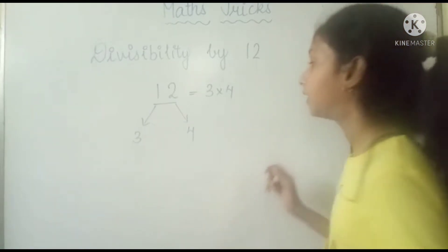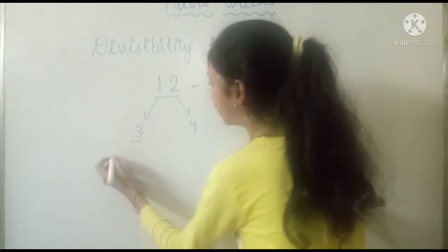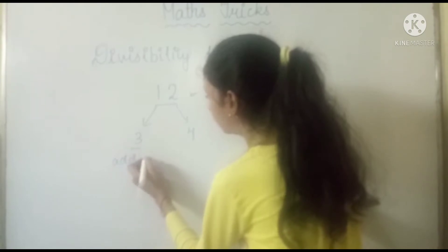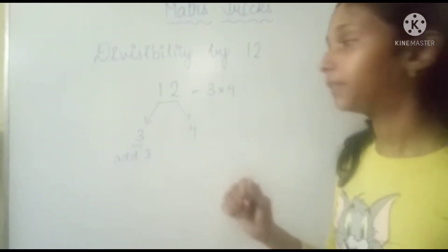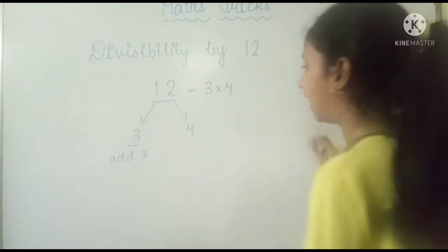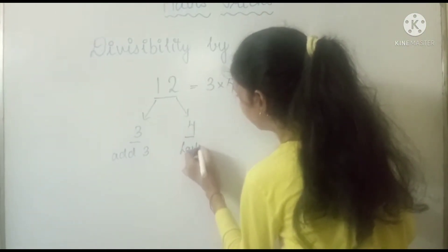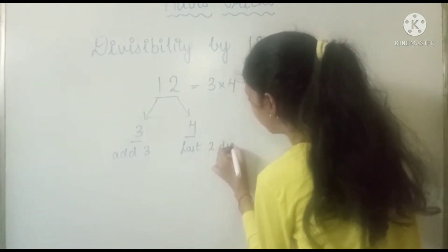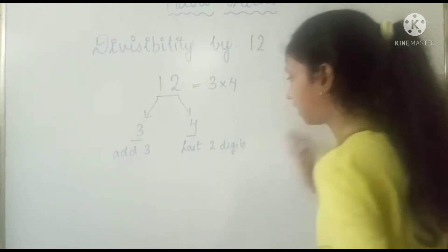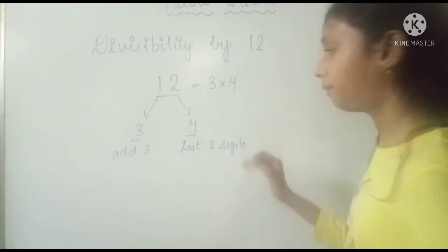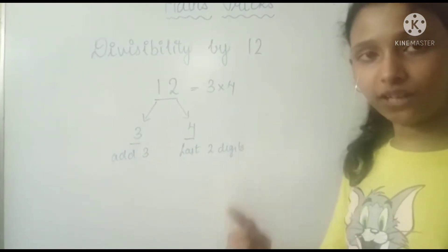The criteria for divisibility of 3 is that the digit sum should add up to 3 or be a multiple of 3. For 4, the last two digits should be a multiple of 4. If both these criteria are fulfilled for a number, then it is divisible by 12.